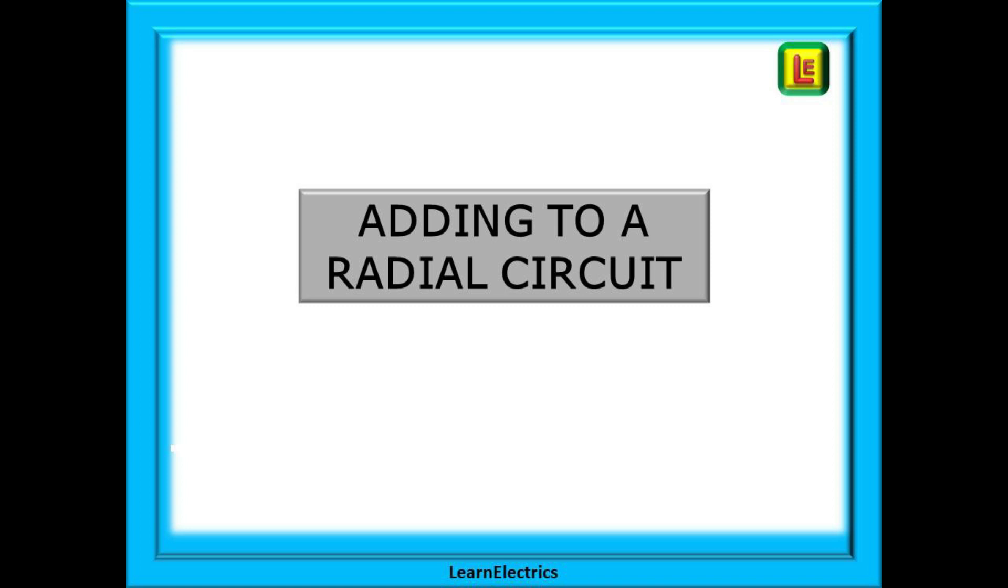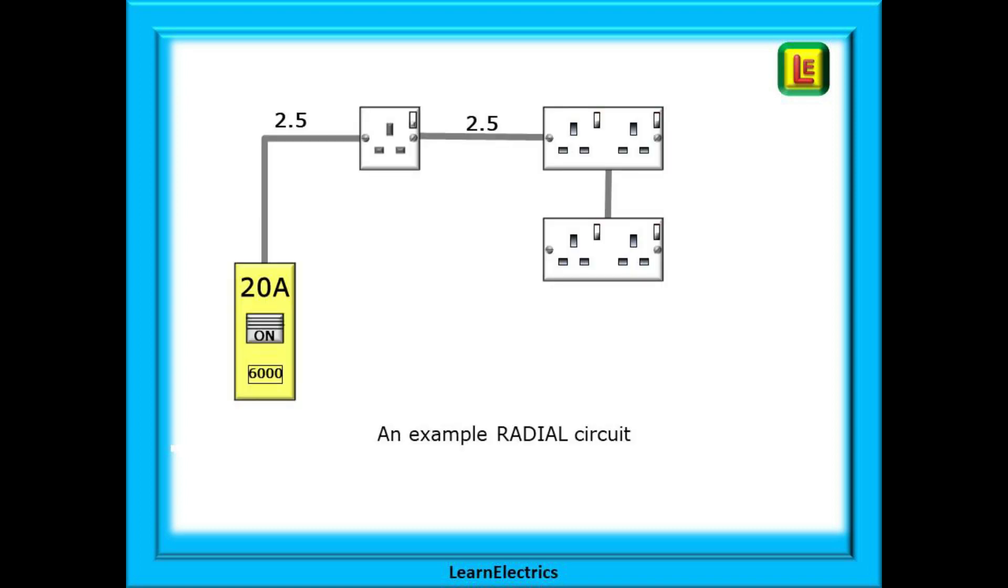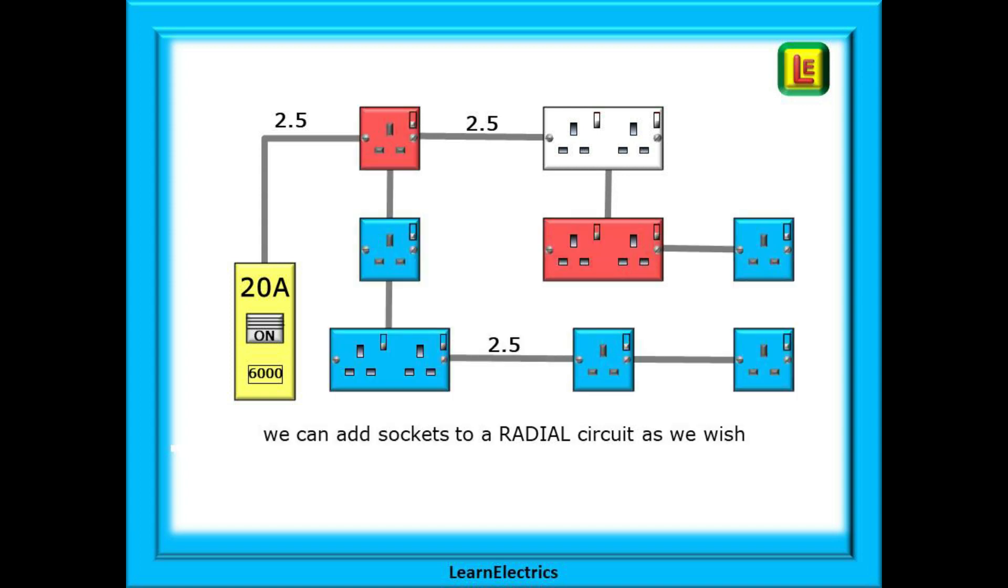Now we can look at adding to a radial circuit and as you will see they can be so much easier. Let's start with an easy example of a radial circuit. One wire leaves the consumer unit visits each socket and then stops. All the wiring is in 2.5 millimeter twin and earth and the circuit breaker is rated at 20 amps which for safety is quite correctly lower than the cable rating. Because the cable in our example will take 27 amps and the fuse is at 20 amps we can never overload the cable the breaker will trip first. This means that we can add any number of sockets in any pattern to this radial circuit. All we need to do is to make sure that all the cables are 2.5 millimeters in size.